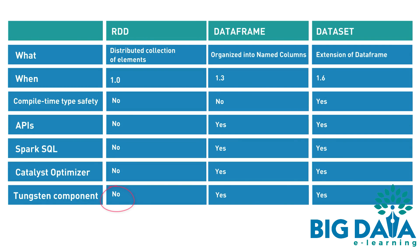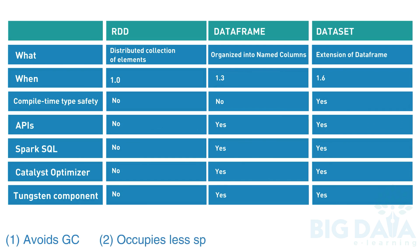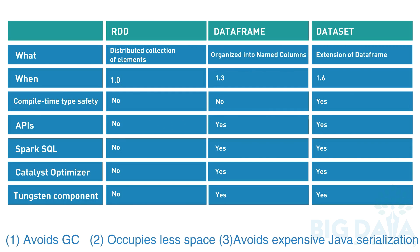Seven: RDDs don't use the Tungsten component, whereas DataSet and DataFrames use the Tungsten component, part of the Spark SQL Engine, that enables storing data in off-heap memory in binary format. This provides three main advantages: A) avoids garbage collection by storing data in off-heap memory; B) occupies less memory space; and C) avoids expensive Java serialization by storing data in binary format.